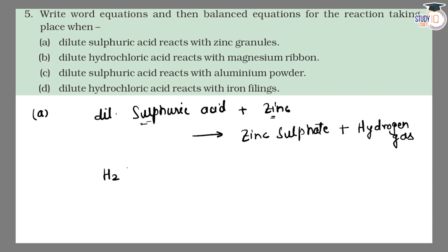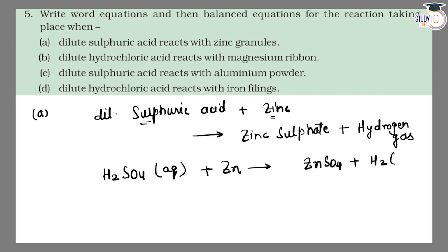Balanced equation: H₂SO₄ (dilute, aqueous) + Zn → ZnSO₄ (aqueous) + H₂ (gas). This reaction is balanced automatically.